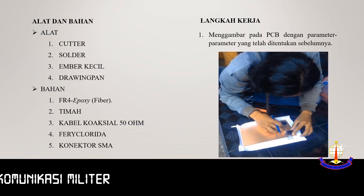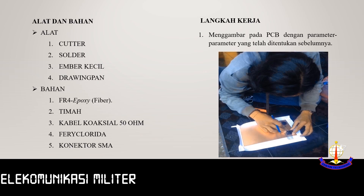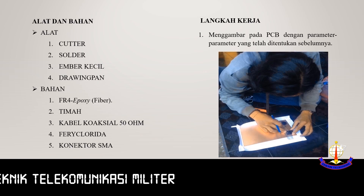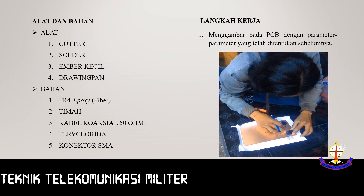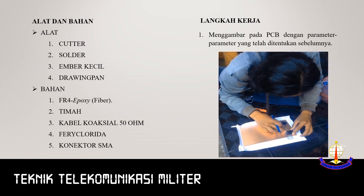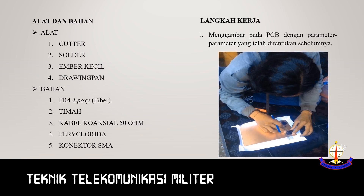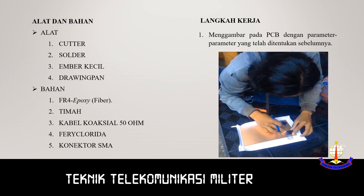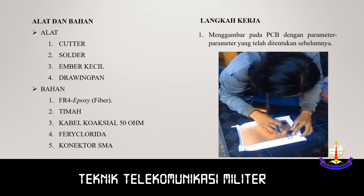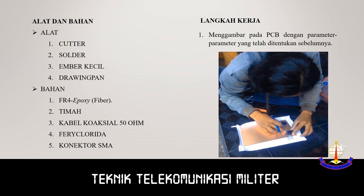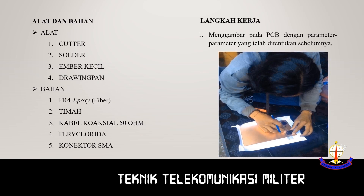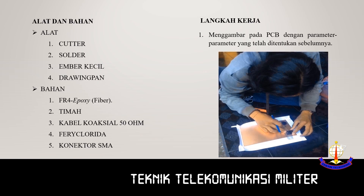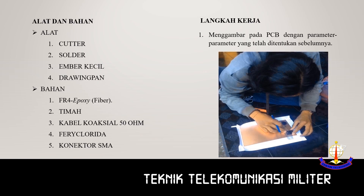Selanjutnya adalah menyiapkan alat dan bahan. Alat yang digunakan: cutter, solder, ember kecil, drawing pen. Bahan yang digunakan: FR4 epoxy atau fiber, timah, kabel koaksial 50 ohm, feri klorida, konektor SMA. (Next, prepare tools and materials. Tools: cutter, soldering iron, small basin, drawing pen. Materials: FR4 epoxy/fiber board, solder tin, 50-ohm coaxial cable, ferric chloride, SMA connector.)